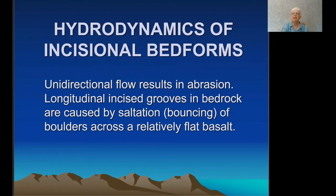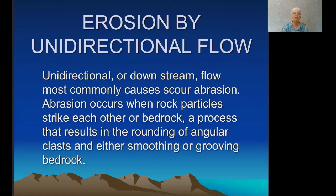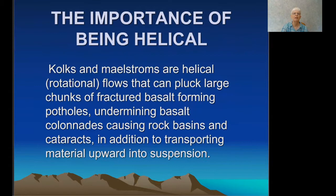Abrasion occurs when rock particles strike each other or bedrock, a process that results in the rounding of angular clasts and the smoothing of bedrock. This is a slow, repetitious process occurring in rivers today, which is sped up by flash floods. However, the enormity of the glacial outburst floods that created the Scablands and lakes was accomplished by plucking — the ripping out of fractured bedrock. Colks and maelstroms are helical or rotational flows. They can pluck large chunks of fractured basalt, forming potholes, undermining basalt colonnades, causing rock basins and cataracts, in addition to transporting material upward into suspension.